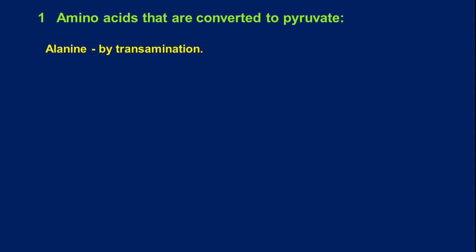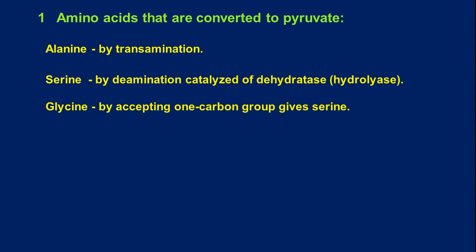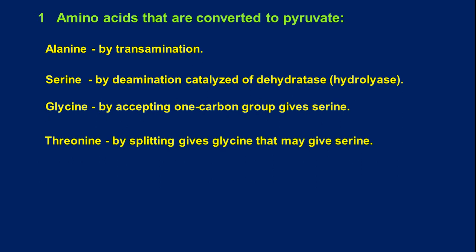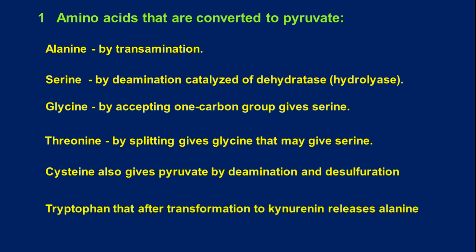Alanine gets directly converted to pyruvate by transamination. Serine by deamination, catalyzed by dehydratase — dehydration also happens. In case of glycine, it has only two carbons, so it will accept one carbon and gives first serine, which is then converted to pyruvate. Threonine by splitting gives glycine, which may give serine — a two-step process. Cysteine also gives pyruvate by deamination and desulfuration. Tryptophan, after transformation to kynurenine, releases alanine that will be converted to pyruvate.